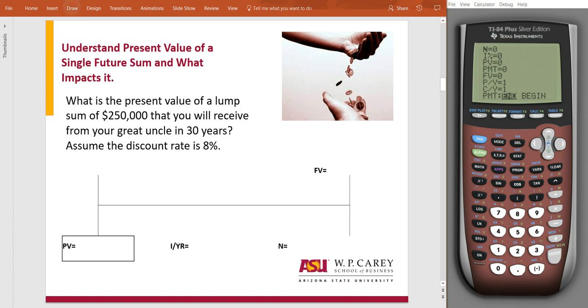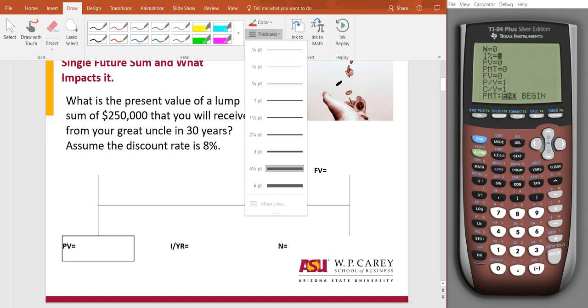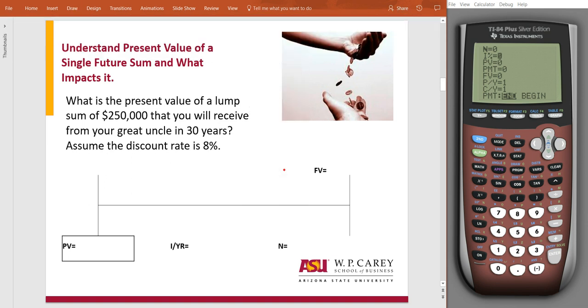So, how much is that money worth today? It says that we know that we're going to get that $250,000 in the future. N is going to be the 30 years. Our I is at 8%. And we're solving for PV.